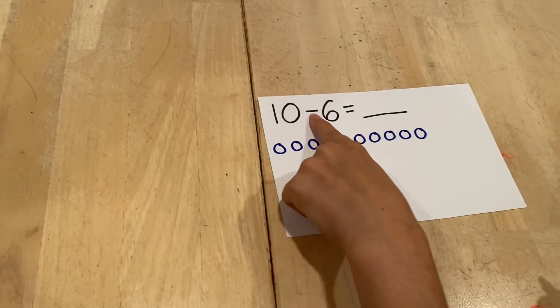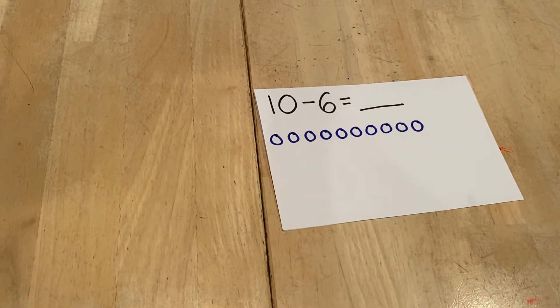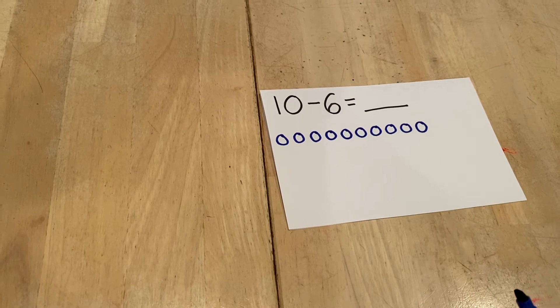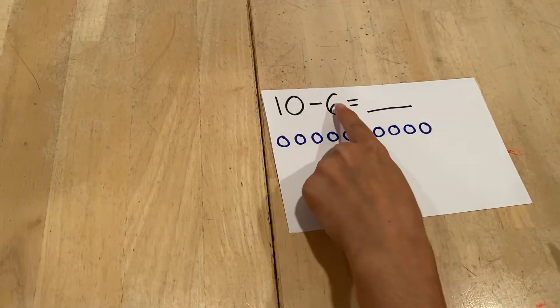Then it says minus 6, so I'm going to take 6 away. This does not mean I'm going to erase it. I'm just going to put an X in 6 of them.